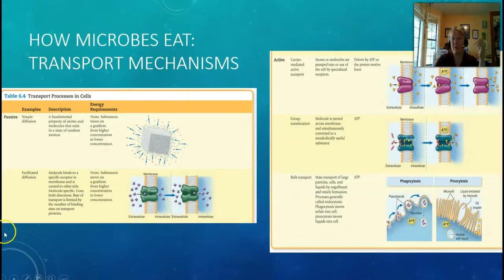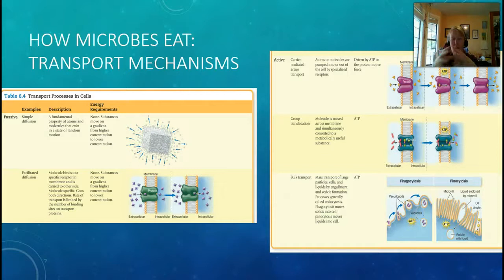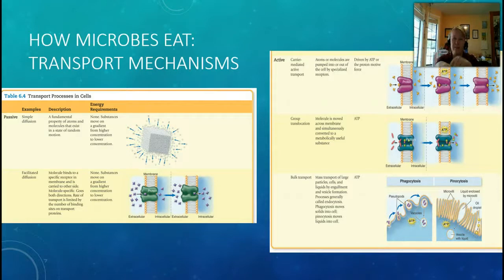We've talked about what microbes need to eat to live. Now let's talk about how they get nutrients into the cell. There are two main types of processes: passive transport and active transport. Passive transport does not require energy, because molecules move down the concentration gradient. Outside the cell there's a lot more of a given compound than inside, so it's easy for it to come in — like opening a door in a dam and water rushing out.